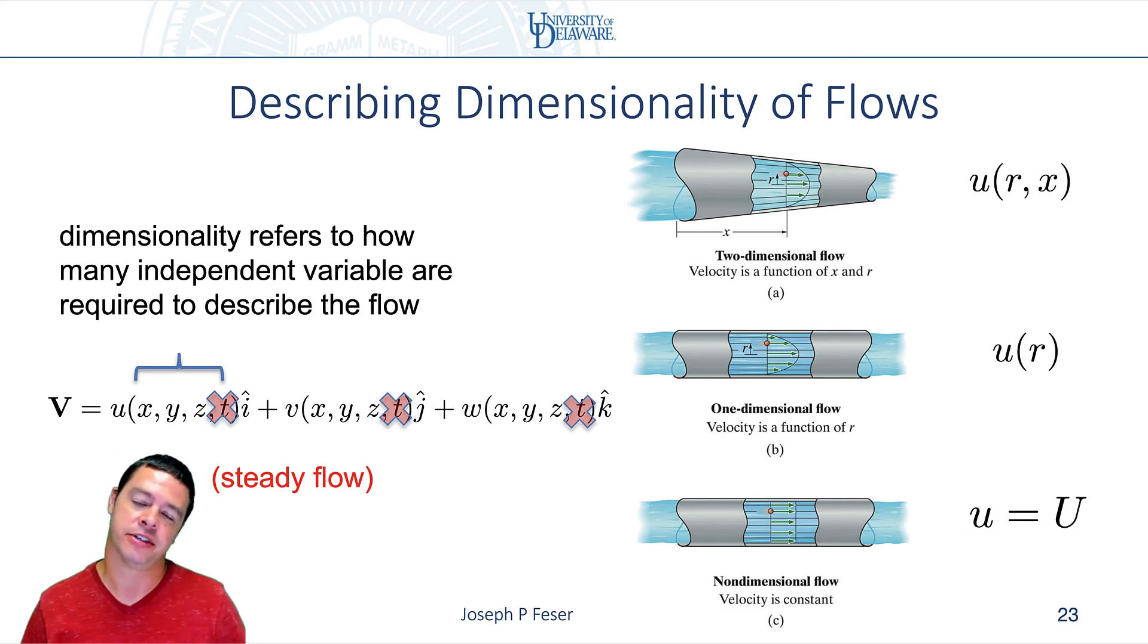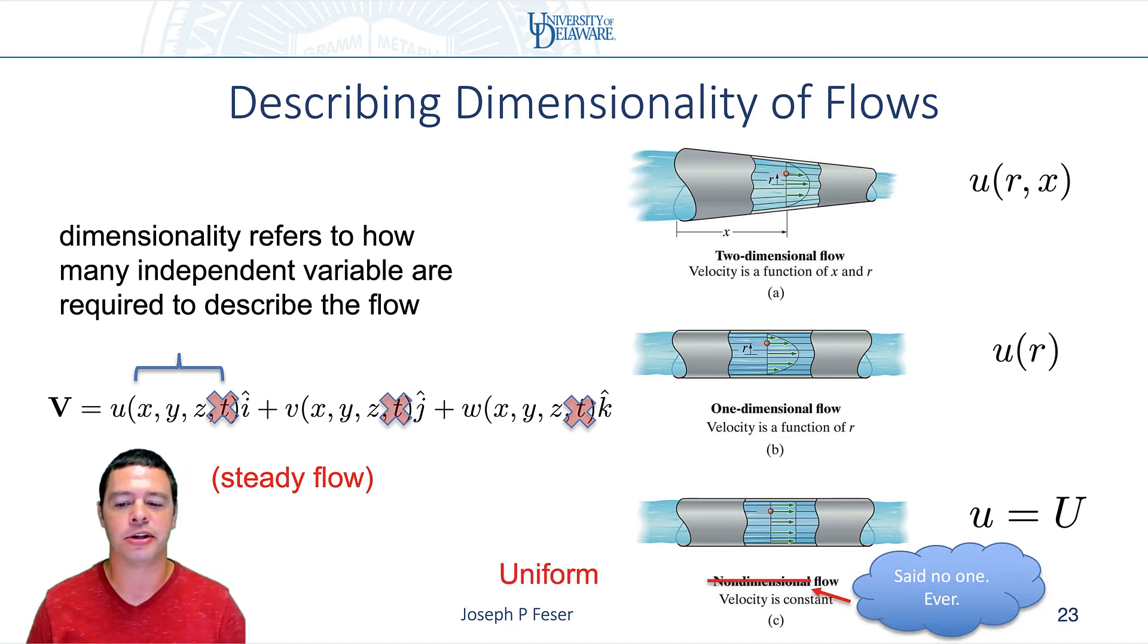So as far as I know, nobody outside of this textbook calls that non-dimensional flow. That's not a thing I've ever heard. So I would insist that you not call it that. I have always heard this called uniform flow, and that's what it's called in other textbooks as well. So I will never refer to this as non-dimensional flow. I will always refer to this as uniform flow.